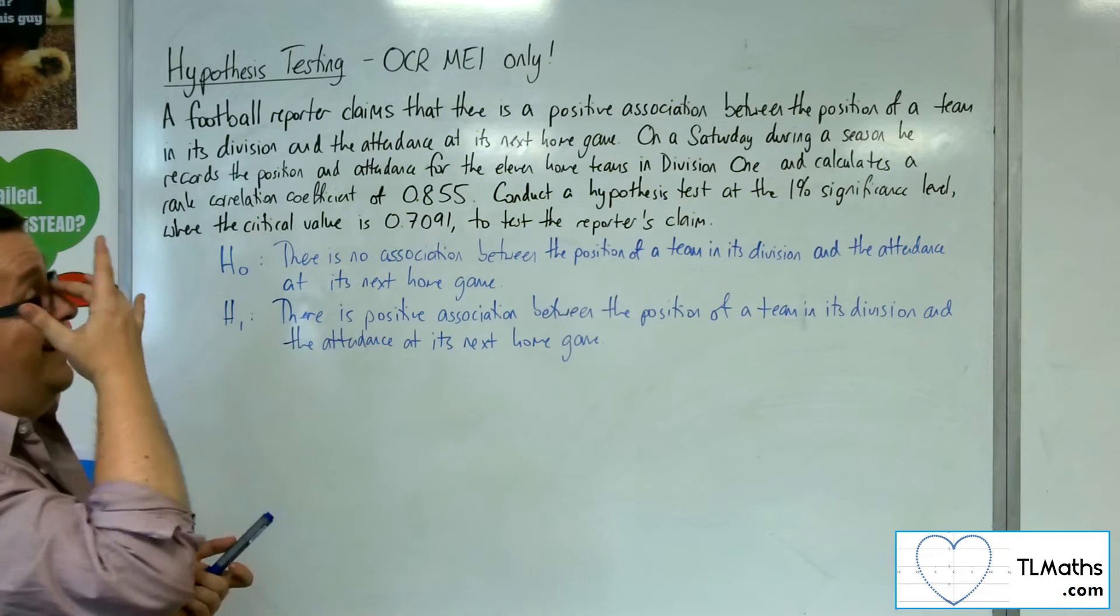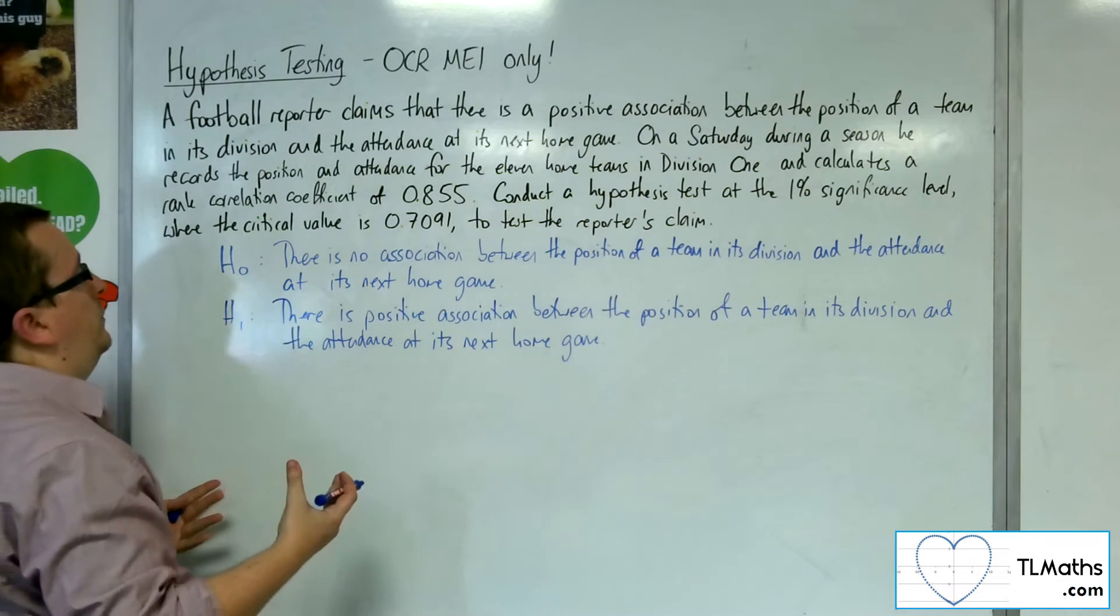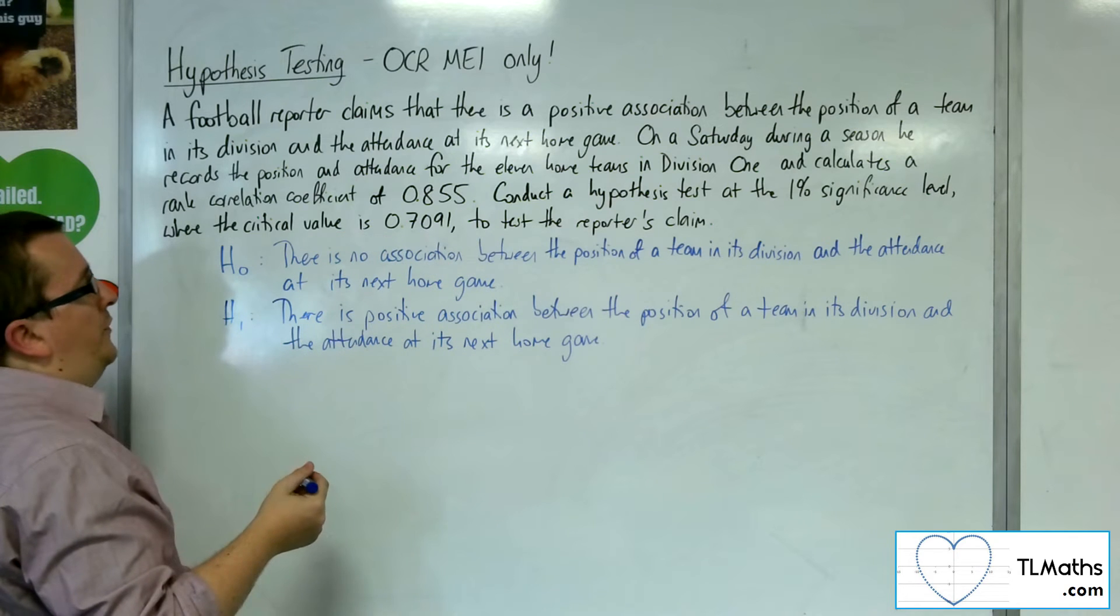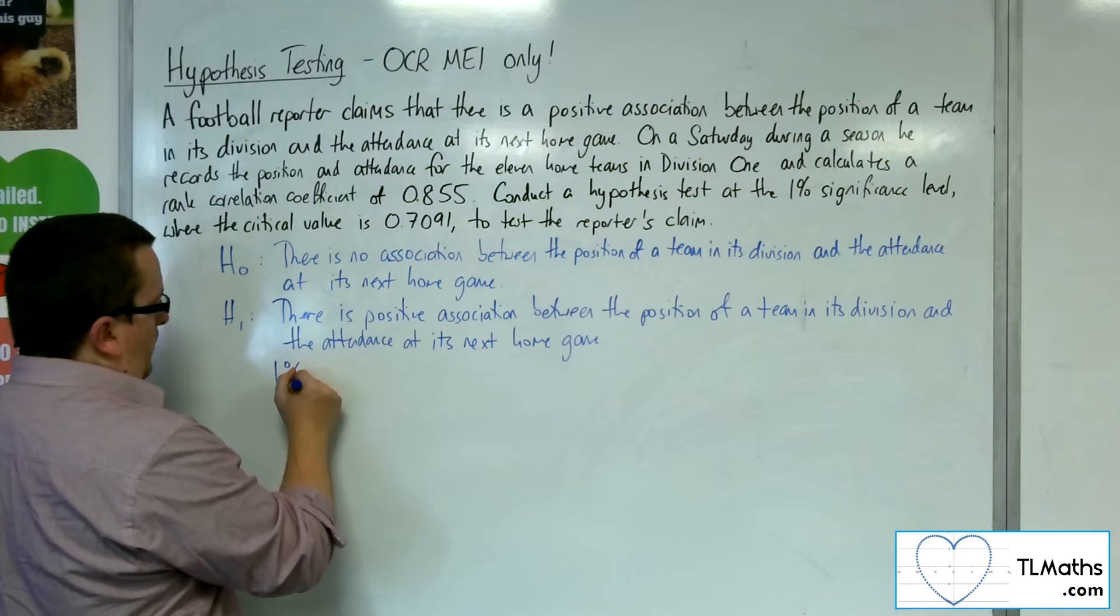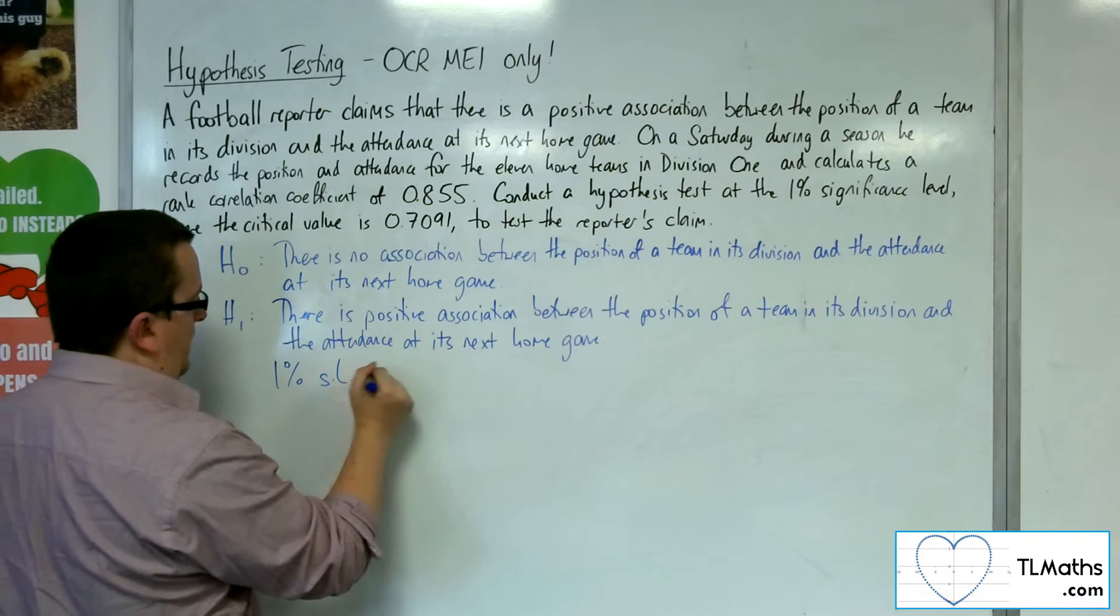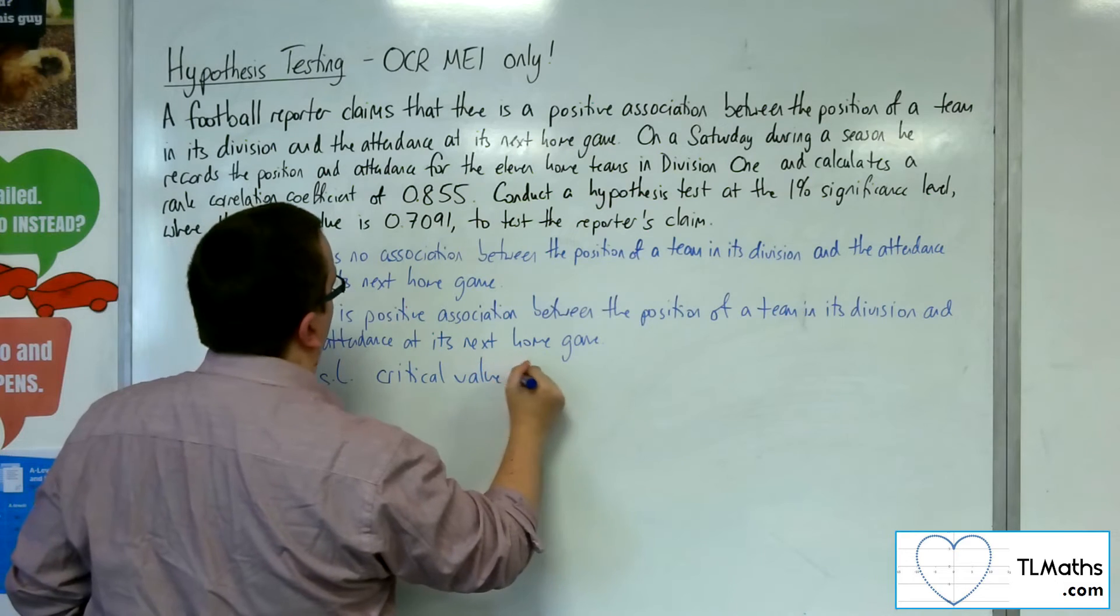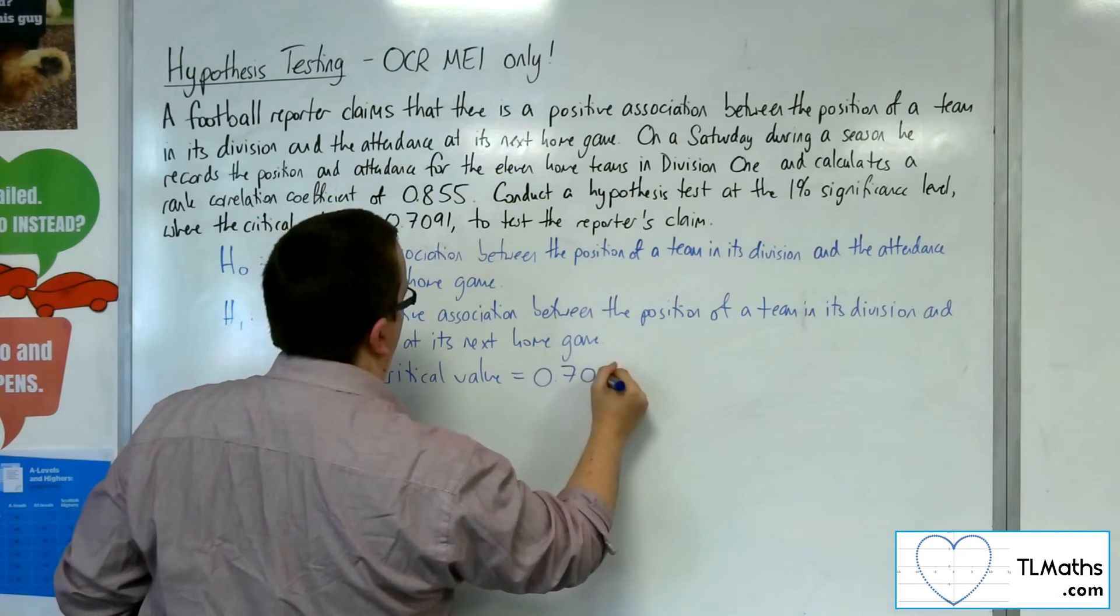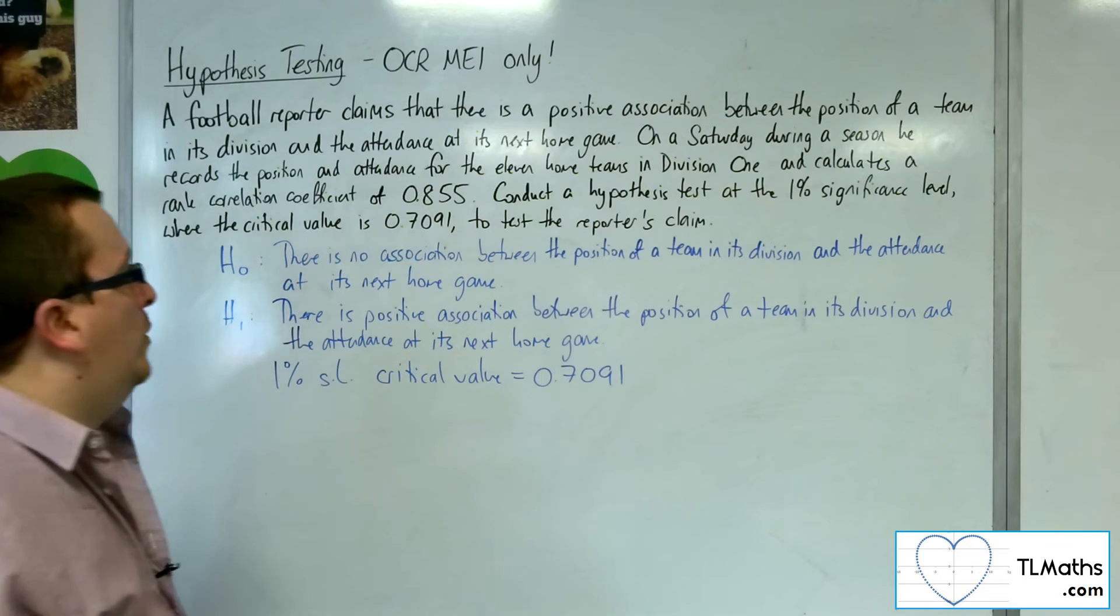At this stage, we then know that the 1% significance level critical value is 0.7091. And we've got a correlation coefficient of 0.855.